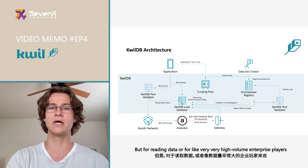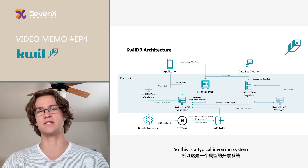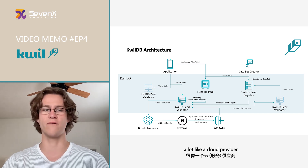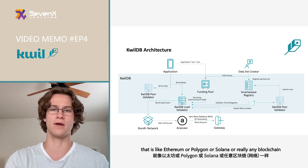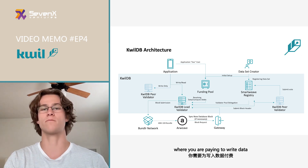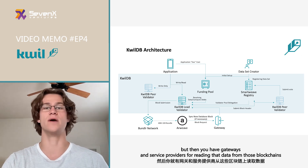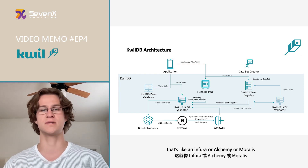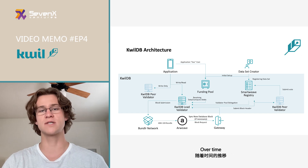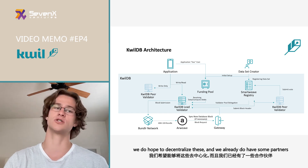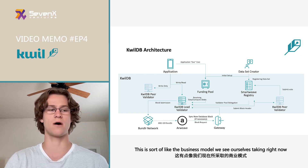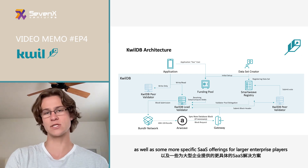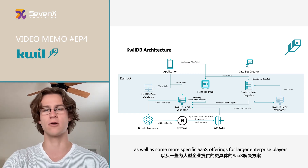For reading data or for very high-volume enterprise players, we also have SaaS offerings — a typical invoicing system, a lot like a cloud provider. The best analogy: the writing side is like Ethereum, Polygon, or Solana, where you're paying to write data, and then you have gateways and service providers for reading that data, like Infura, Alchemy, or Moralis. Over time we do hope to decentralize these, and we already have partners working to provide decentralized and trustless access to this data.